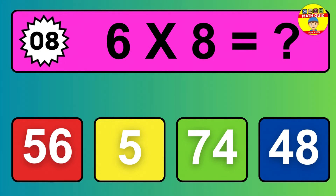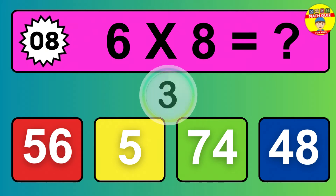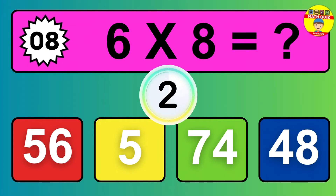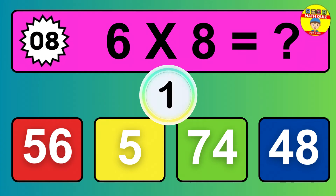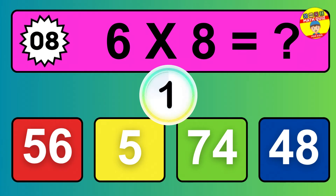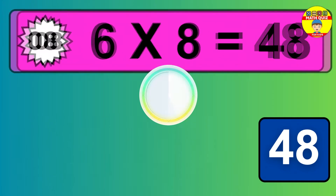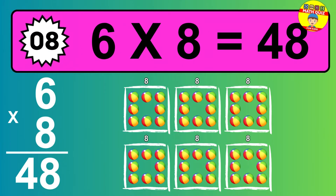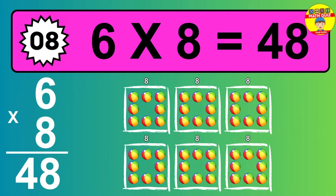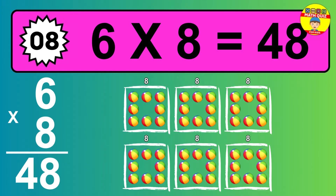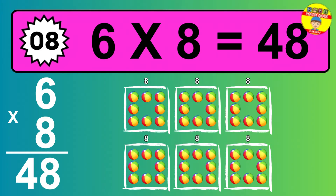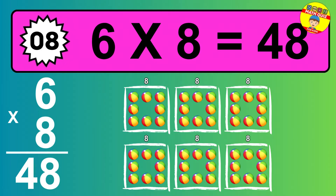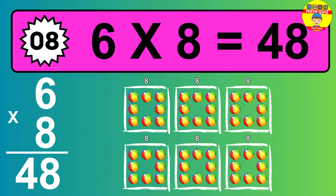Question 8. 6 times 8 equals what? The answer is 6 times 8 is 48. To calculate, we have 6 groups with 8 balls each one. So how many balls do we have? 48 balls.